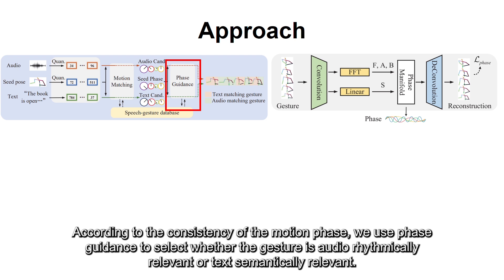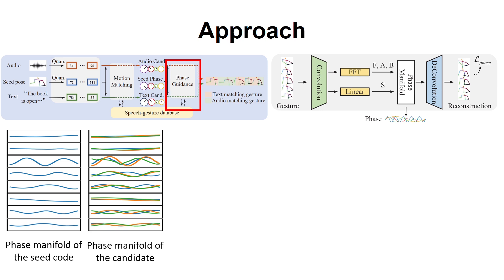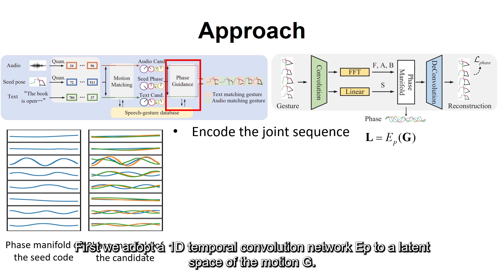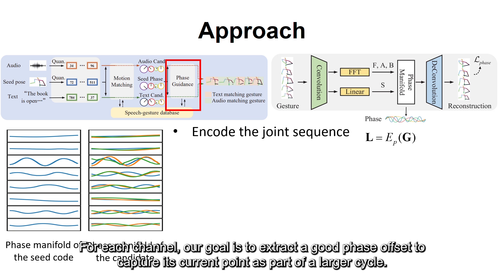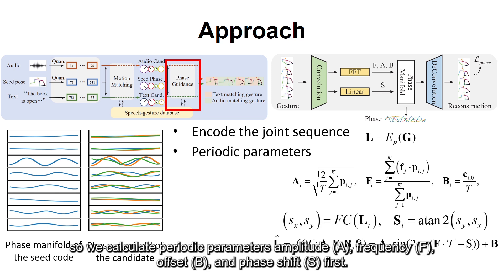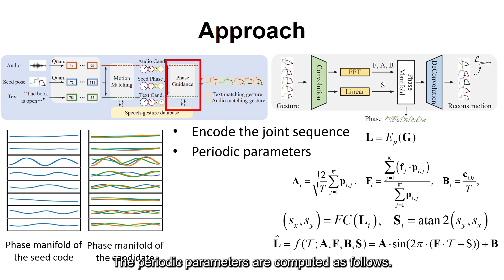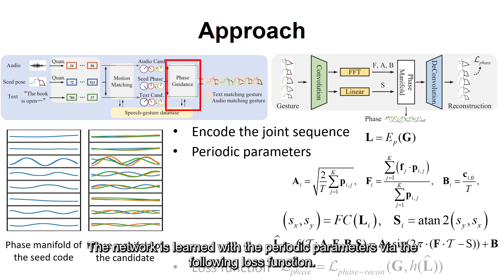According to the consistency of the motion phase, we use phase guidance to select whether the gesture is audio-rhythmically relevant or text-semantically relevant. We adopt a 1D temporal convolution network E_P to project motion G to a latent space for each channel. Our goal is to extract a good phase offset to capture its current point as part of a larger cycle. Since it is complicated to calculate the phase of a cluttered curve directly, we calculate periodic parameters: amplitude A, frequency F, offset B, and phase shift S. We apply differentiable real fast Fourier transform to each channel and create the zero-indexed matrix of Fourier coefficients. The periodic parameters and network are learned via a dedicated loss function.